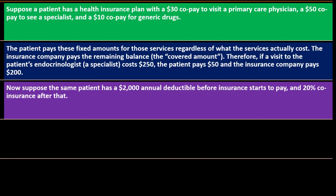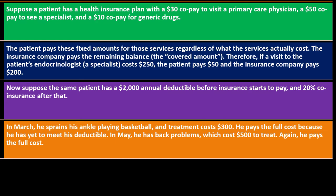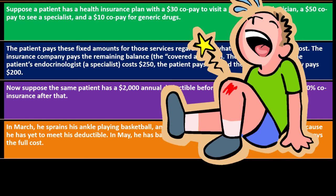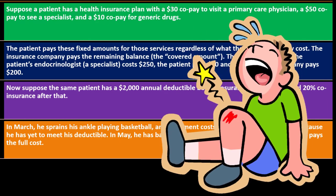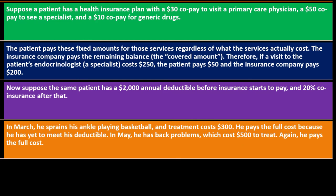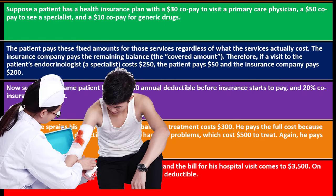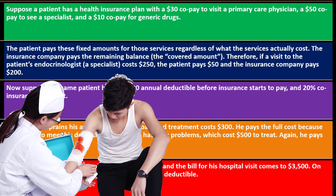Now suppose the same patient has a $2,000 annual deductible before insurance starts to pay, and 20% co-insurance after that point. In March he sprains his ankle playing basketball and treatment costs $300 — he pays the full cost because he has yet to meet his deductible. In May he has back problems which cost $500 to treat — again he pays the full cost.